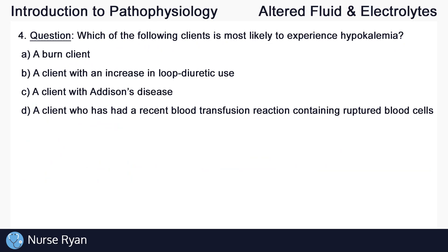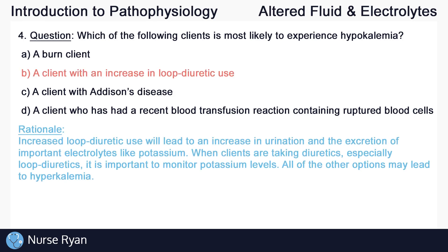Question number four. Which of the following clients is most likely to experience hypokalemia? The answer here is B, a client with an increase in loop diuretic use. Increased loop diuretic use will lead to an increase in urination and the excretion of important electrolytes like potassium. When clients are taking diuretics, especially loop diuretics, it is important to monitor potassium levels. All of the other options may lead to hyperkalemia.